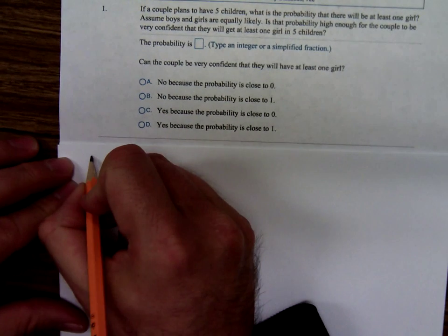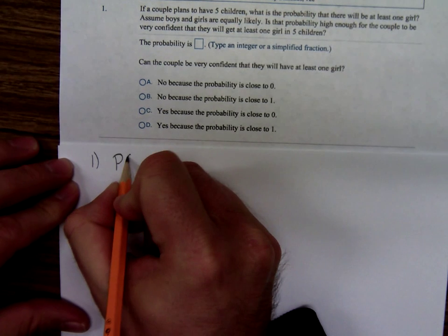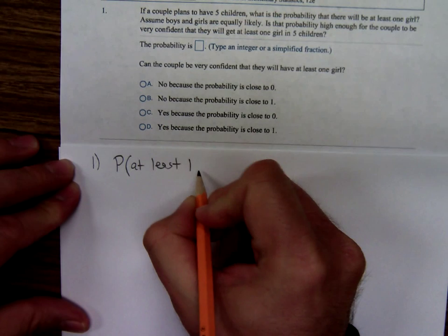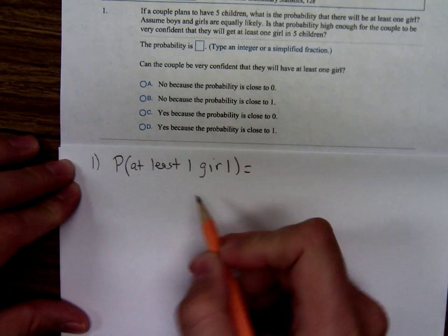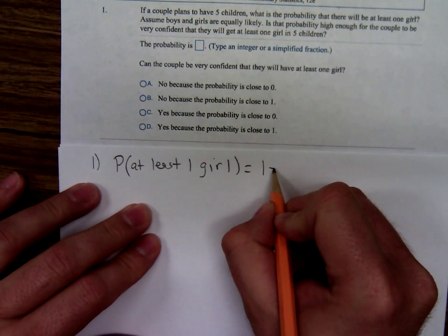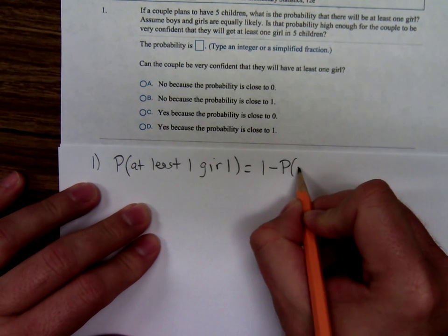Well, let's see. We want to know the probability of getting at least one girl. The probability of at least one girl would be one minus the probability of getting no girls.